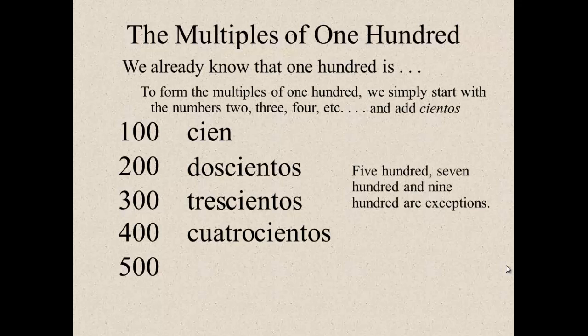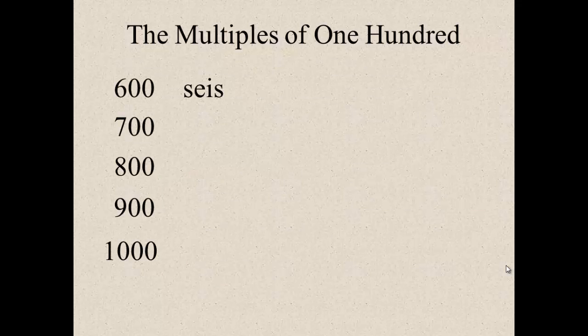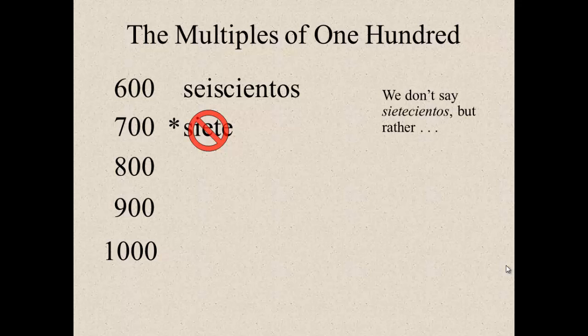Five hundred, seven hundred, and nine hundred are the exceptions. We don't say cincoscientos, but rather we say quinientos. For 600, we say seiscientos. For 700, we don't say sietecientos, but rather we say setecientos. So, not sietecientos, but setecientos.